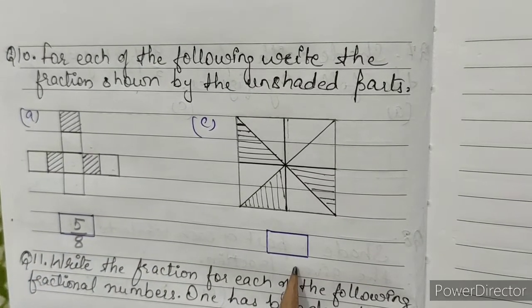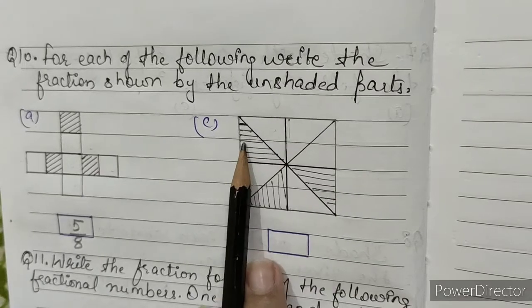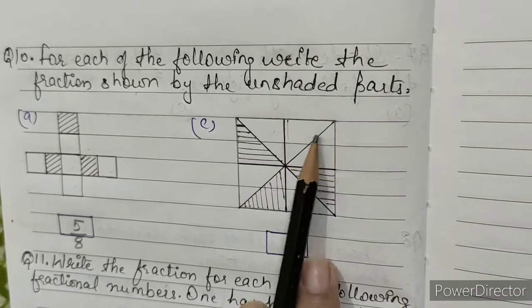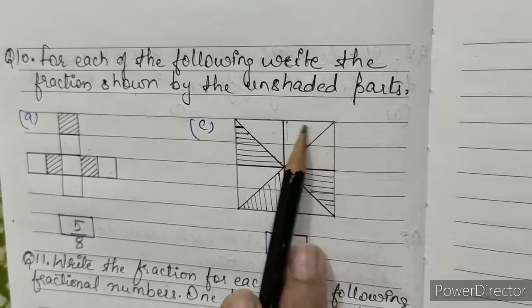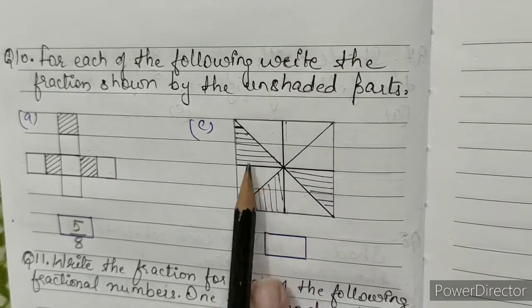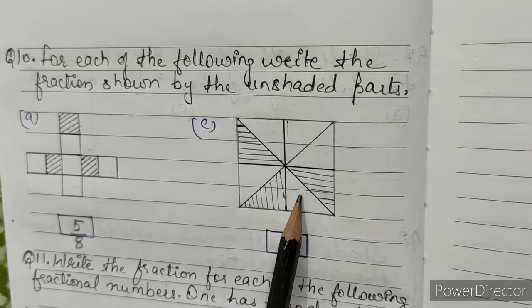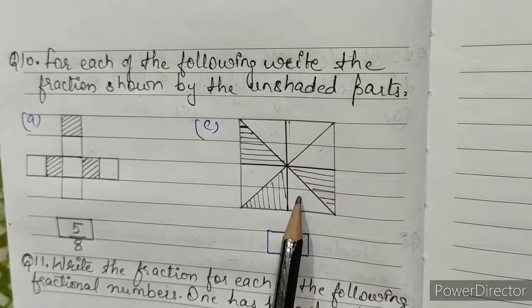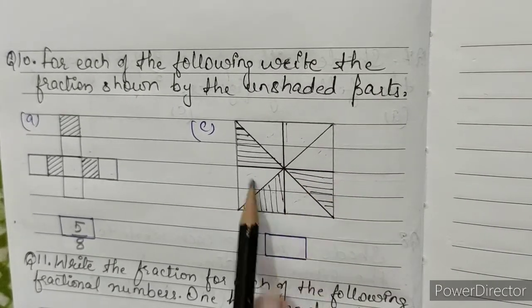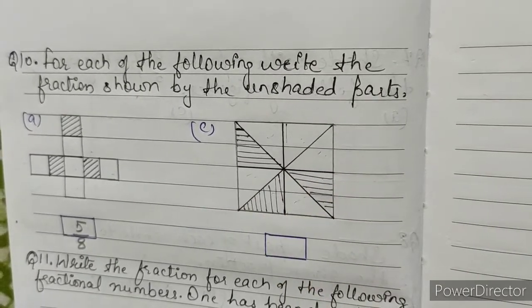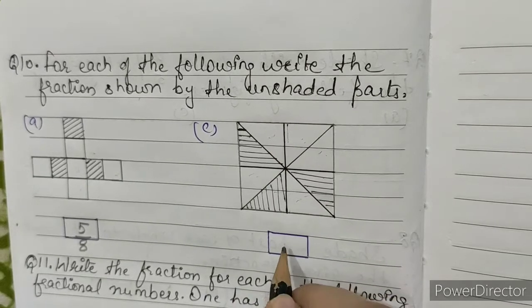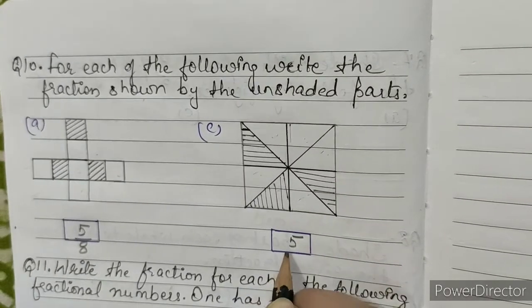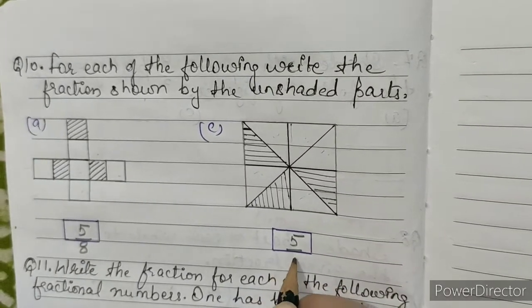C: in this figure there are 8 equal parts — 1, 2, 3, 4, 5, 6, 7, 8. Out of these, 5 parts are shaded. So our answer will be 5 by 8.